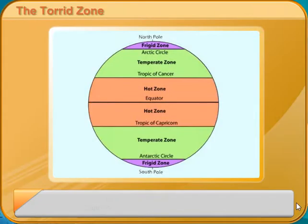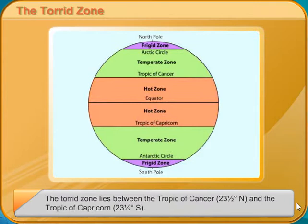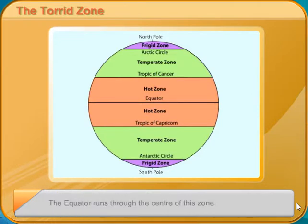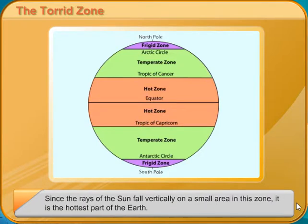The Torrid Zone lies between the Tropic of Cancer, 23.5 degrees north, and the Tropic of Capricorn, 23.5 degrees south. The equator runs through the center of this zone. Since the rays of the Sun fall vertically on a small area in this zone, it is the hottest part of the Earth.